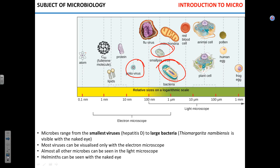On the other end of that range would be the gigantic bacterium Thiomargarita namibiensis, which can actually be seen with the naked eye - it's about half a millimeter. For a bacterium, it's awfully huge. Most bacteria, protozoa, fungi, and algae can be seen in the light microscope. Viruses, as a general rule, cannot - they're too small; you have to use electron microscopy.